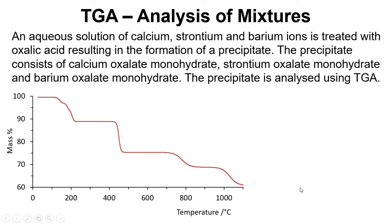So we can see it decomposing in different steps and stages. Now the first loss is the dehydration so we're losing water and M here represents calcium, strontium and barium. So we've sort of got that in one step. So we're just using M to say all three of these metals are undergoing this dehydration and we're getting this loss of water.